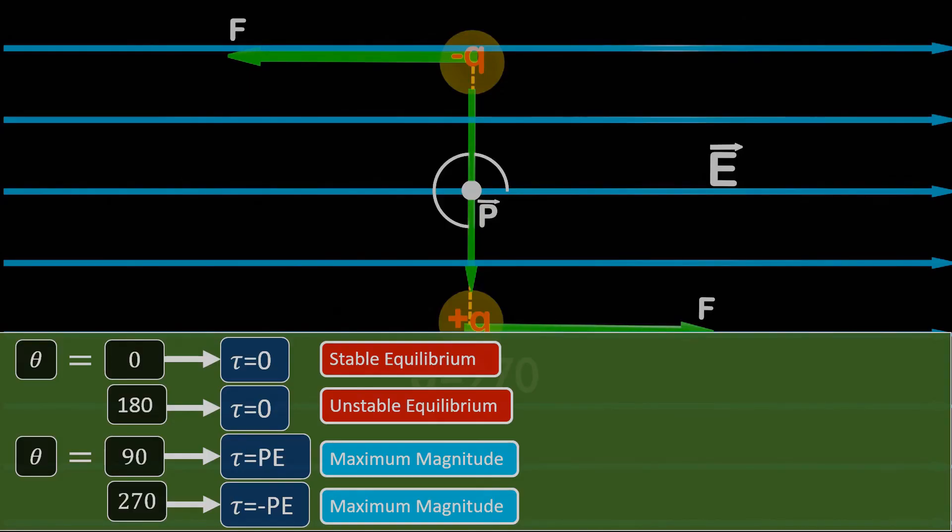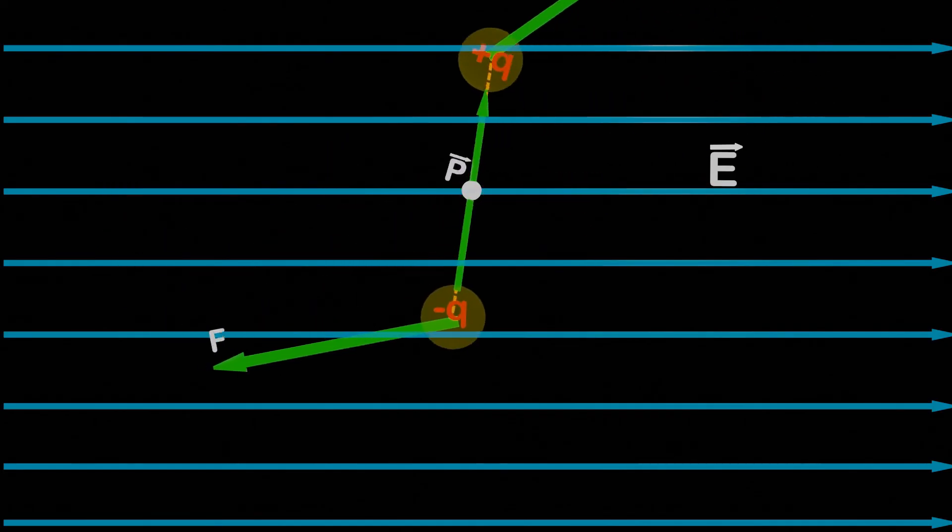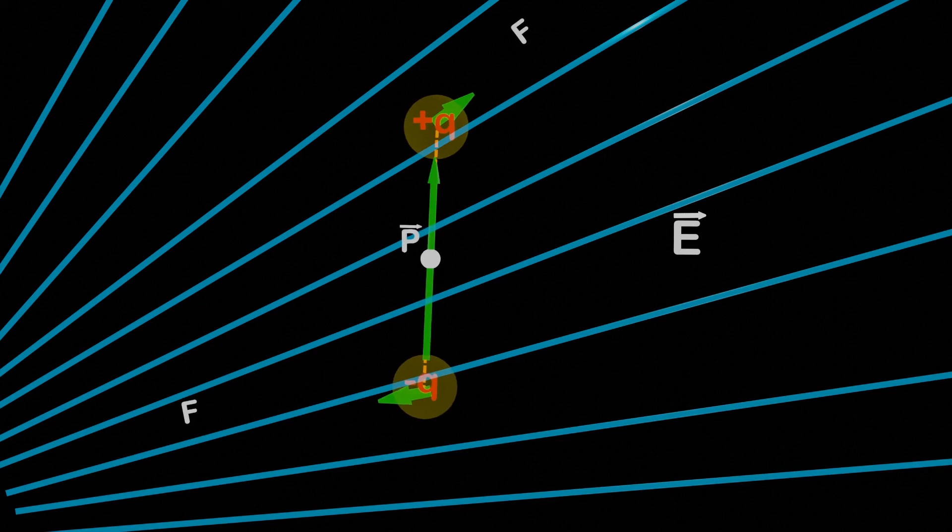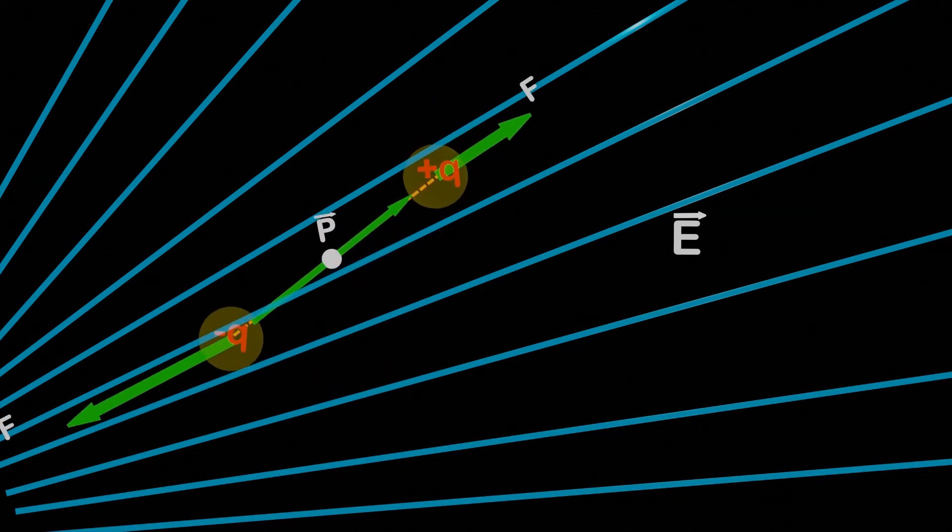We have discussed the dipole in a uniform electric field, where the electric field intensity remains the same at every position. This ensures that equal forces act on both ends of the dipole, resulting in zero net force while the torque acts on it. However, if we place the dipole in a non-uniform electric field, different forces will act on both ends of a dipole, leading to an unbalanced force. Therefore, along with torque, the dipole will experience motion in the direction of the maximum force.